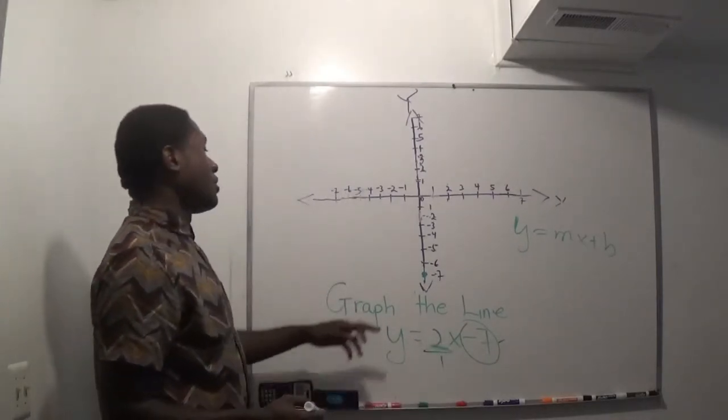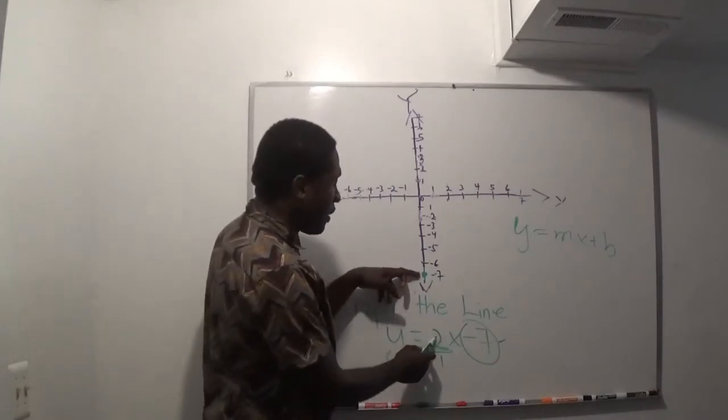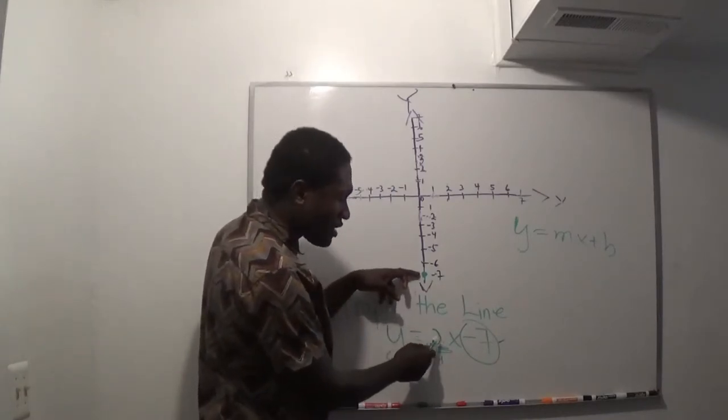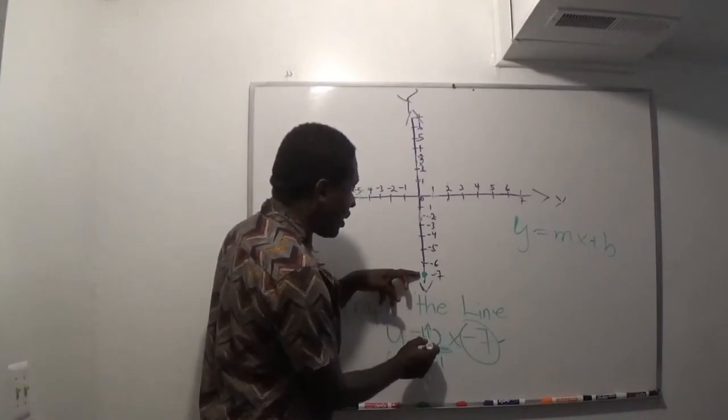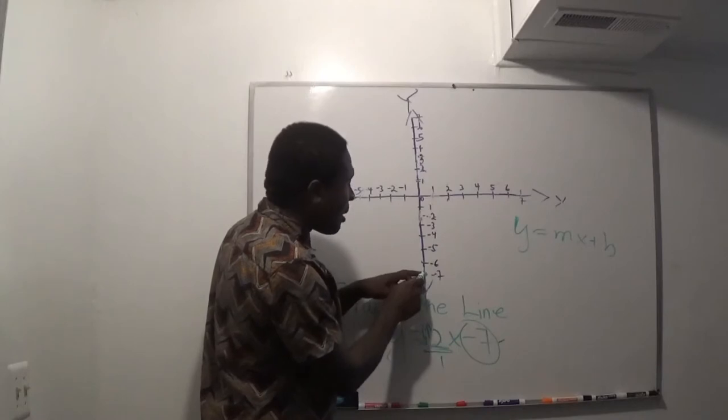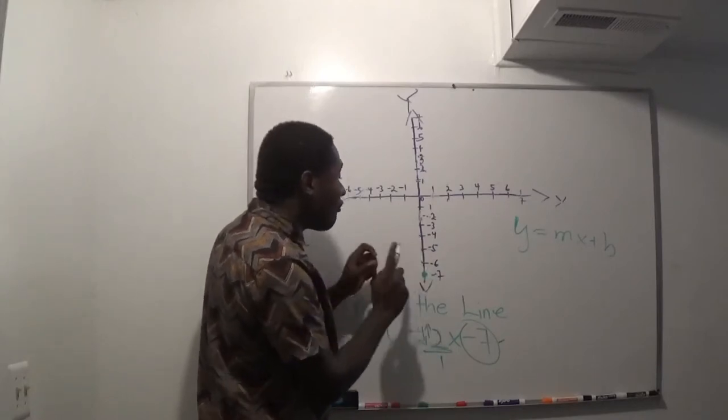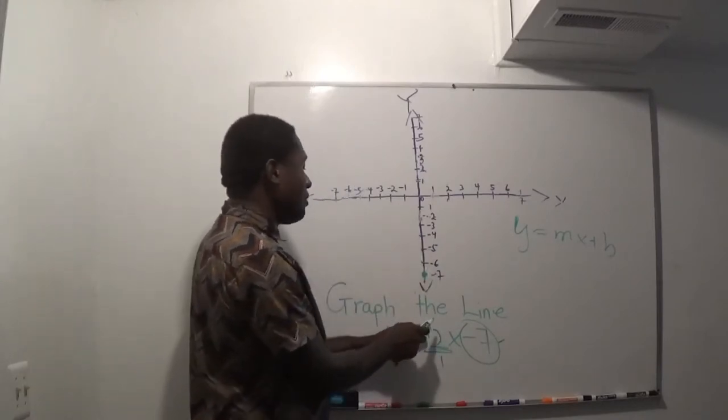So at the y-intercept, slope is positive 2 over 1. If the top number is positive, I know I have to go up. If it was negative, I go down. So always at the y-intercept, I'm either gonna go up or down first, depending on what the sign for the top number is.